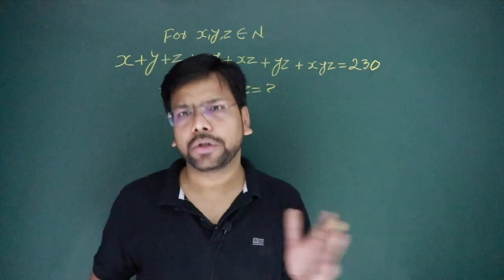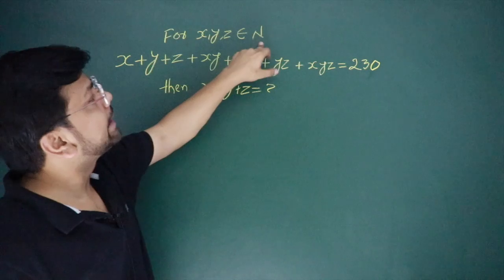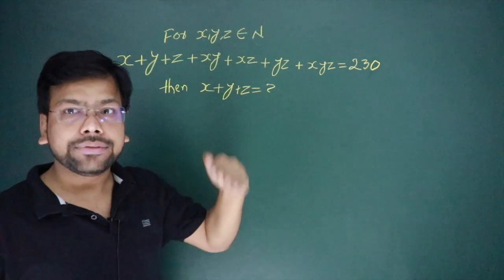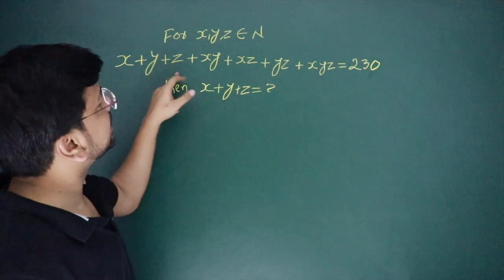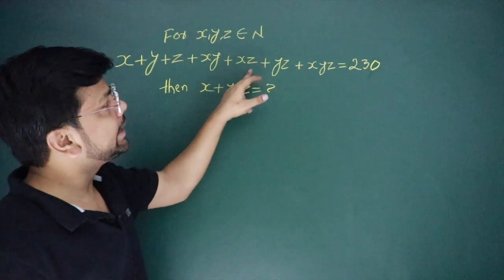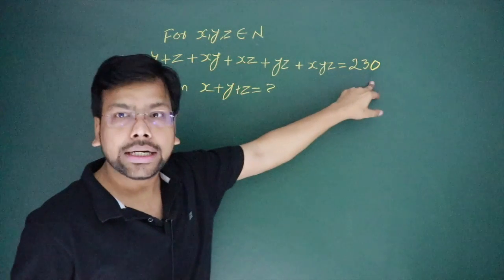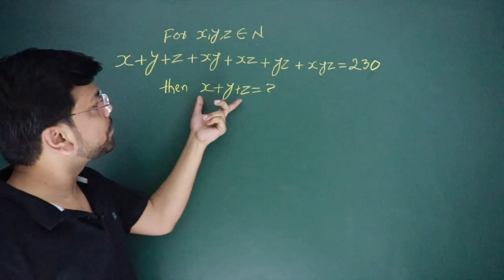You must do this question before your examination. Data is given: X, Y, Z are natural numbers, these are the positive integers. And X plus Y plus Z plus XY plus XZ plus YZ plus XYZ is equal to 231. So what is the value of X plus Y plus Z?